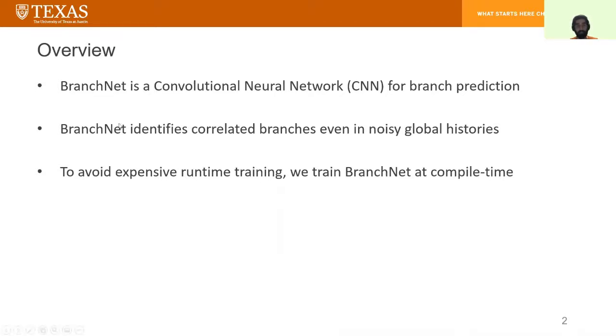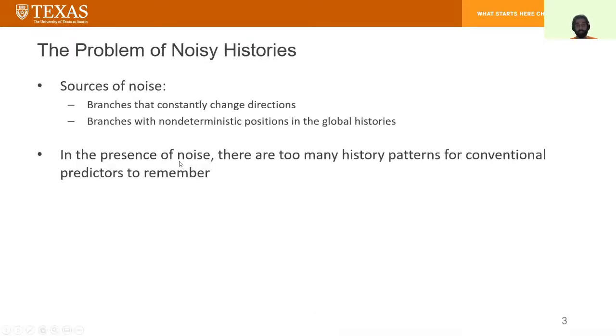BranchNet is very powerful because it can identify correlated branches even in noisy global branch histories. To avoid expensive runtime training, we train BranchNet at compile time. But before we get into the details of BranchNet, let's first define noise.